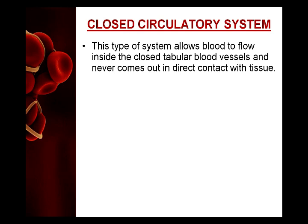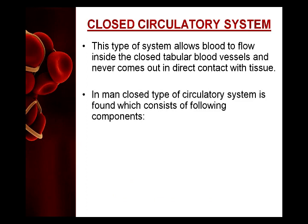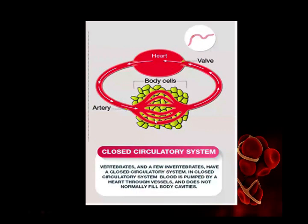Now we move to the closed type circulatory system. In this system, blood flows in vessels and does not come in direct contact with the tissues. Observe the diagram - the vessels are interconnected with each other with no open spaces, meaning they are not in direct contact with the surrounding tissues.